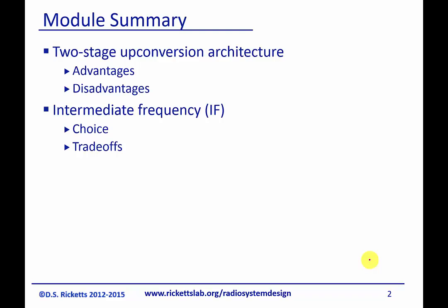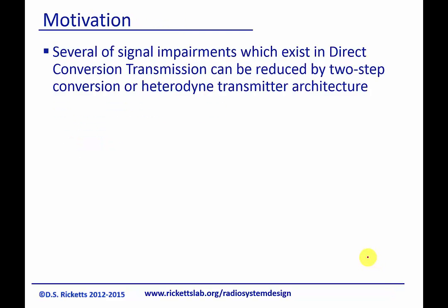In particular, we're going to talk about the intermediate frequency, or the IF, and what are some of the constraints and motivations for choosing a specific IF and some of the trade-offs. The motivation for two-stage upconversion is that several of the signal impairments that we saw in direct conversion can be reduced or eliminated if we use a two-step conversion or a heterodyne transmitter architecture.